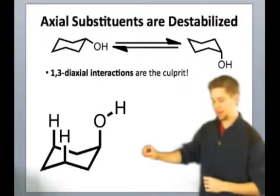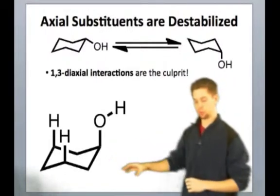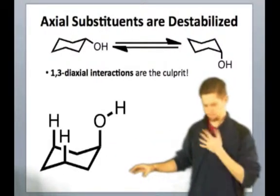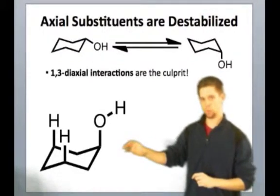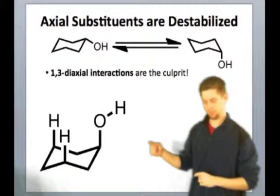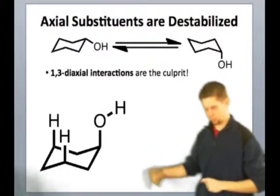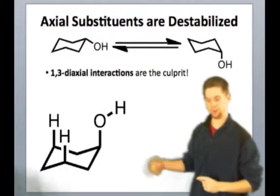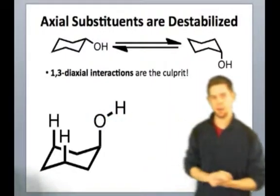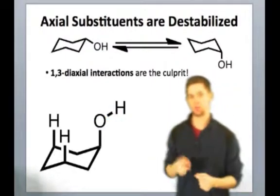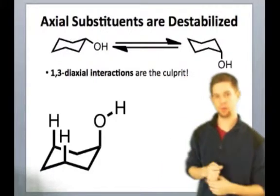Now imagine if we had the hydroxyl group equatorial. So, of course, if that were the case, we wouldn't see this bumping, because as the OH group rotated, it would be rotating out here in free space and not bumping into those axial hydrogens.